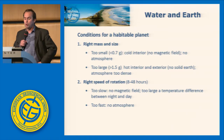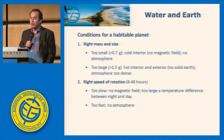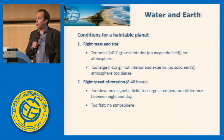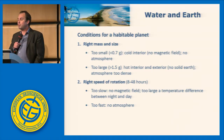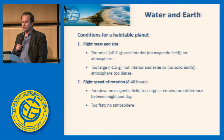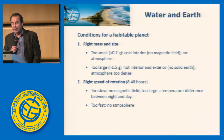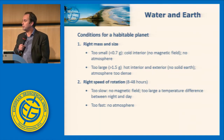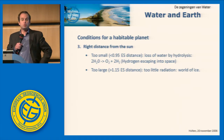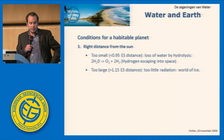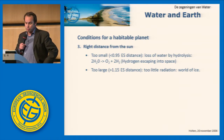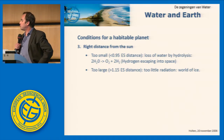For a habitable planet, there are conditions and only a small margin when it comes to mass, rotation, and distance from the sun. We have to have the right mass — if it's too small, we have a cold interior and no magnetic field, which means no protection from cosmic rays and no atmosphere. If it's too large, we have a hot planet with a very dense atmosphere. If the rotation speed is too slow, the temperature difference between night and day will be too large and we'll have no magnetic field. If it's too fast, we probably have no atmosphere.